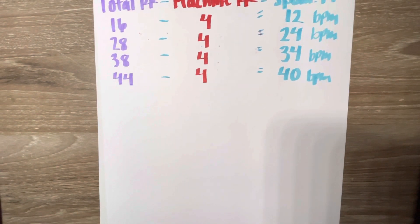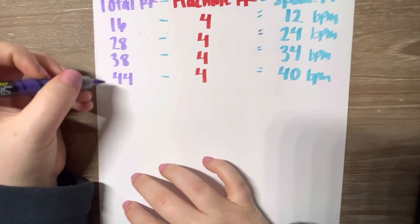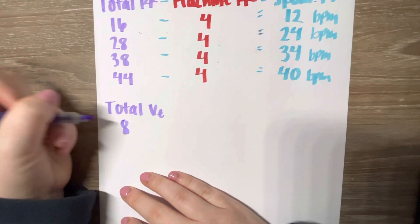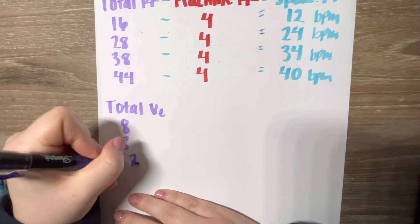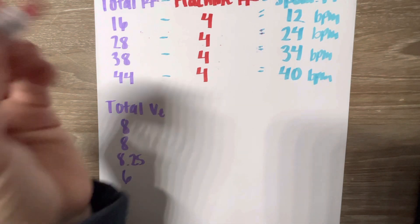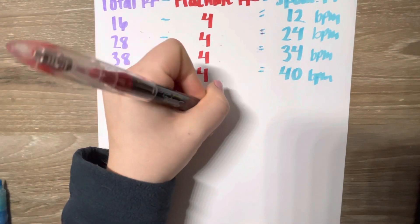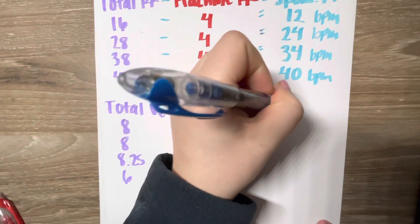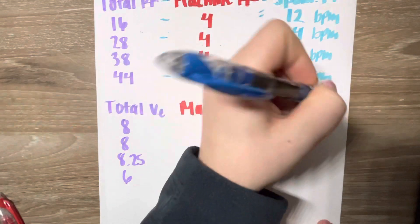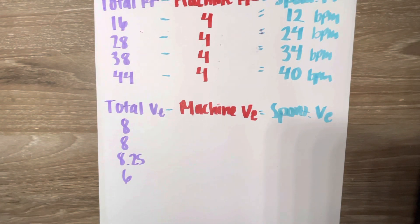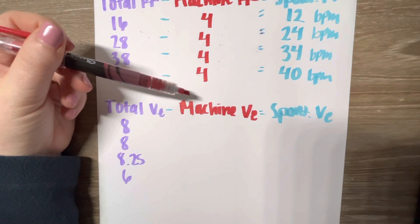Moving on to the next set of calculations, I'm going to find our spontaneous minute volume. So we're given total minute volume and I'm just copying this straight from the problem.